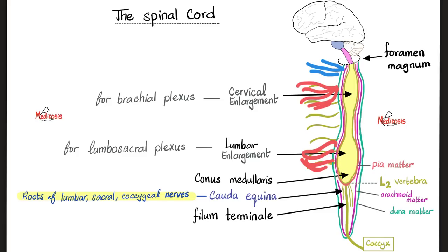The last part of the spinal cord is called the conus medullaris, which looks like the bottom of a cone. The spinal cord itself ends at the level of L1 or L2. The cerebrospinal fluid continues beyond this point. After the cord ends, it gives us the filum terminale, attached to the tip of the coccyx. The descending nerves look like a ponytail — we call them the cauda equina, meaning 'horse's tail.'